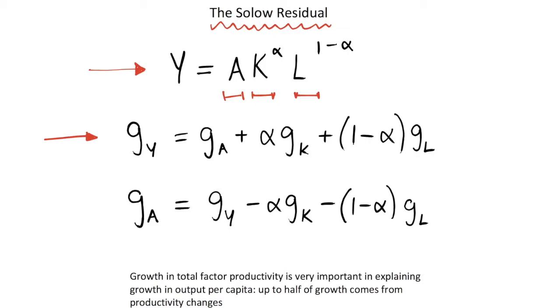If we use rules of logarithms, since in this production function these things are all multiplied together, we can decompose the growth rates of output into this expression. We have the growth rate of the technology A plus alpha multiplied by the growth rate of our capital stock plus 1 minus alpha multiplied by the growth rate of the labor stock.